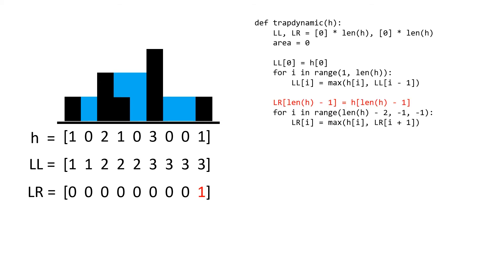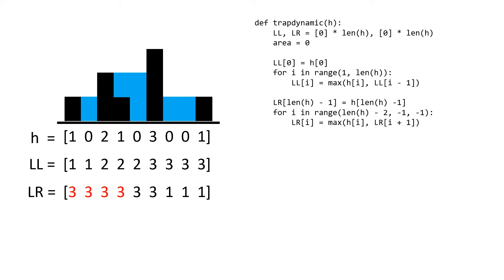Now we calculate the largest right array, starting on the right end and manually assigning the largest right of the last position to itself. For subsequent positions starting at i=7 we compare the current maximum right boundary (at i+1) to the height of the current position, taking the maximum. At i=7 the max of 1 and 0 is 1; at i=6 the max of 1 and 0 is 1; at i=5 the max of 1 and 3 is 3; at i=4 the max of 3 and 0 is 3. Continuing this pattern, the rest of the largest right positions hold the value 3.